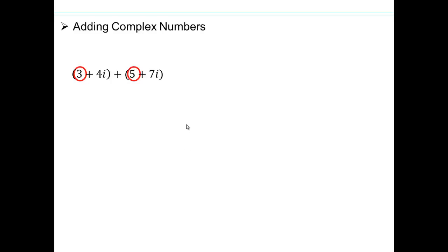So we add like terms together. So clearly, 3 and 5 are like terms. Those are the real parts, so we add those. And 4i, 4 is the imaginary part. 7 is the imaginary part. So we add 4 and 7, the imaginary part, together. So we'll end up with 8 plus 11i, a new complex number.